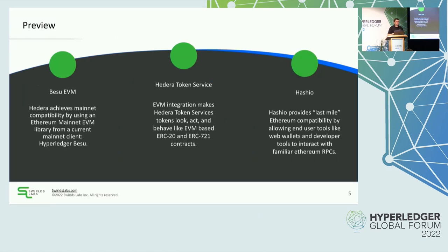As far as integrating the EVM into Hedera, there are three main aspects. First is the Besu EVM itself — we took the EVM from Besu, the mainnet-compatible one that's a major alternative client to geth for Ethereum mainnet, and used that exact same code in Hedera. Next, we took the native Hedera token service and through a series of system contracts — which you might call pre-compiled contracts — exposed the tokens so you can treat them like regular Ethereum tokens. Finally, there's a project called Hashio, a JSON-RPC bridge, because most Ethereum tools use JSON-RPC and a lot of dApps depend on semantics in that, which was the last mile needed to support tools like MetaMask and Hardhat.